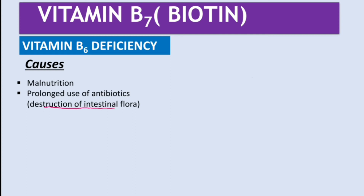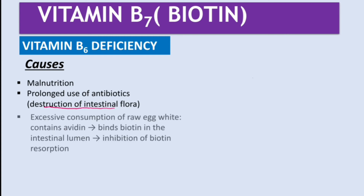A cause very specific to vitamin B7 deficiency is excessive consumption of raw egg white. Raw egg whites contain a molecule called avidin, which binds to biotin in the intestinal lumen and inhibits biotin absorption. People who used to eat large amounts of raw egg whites — such as some bodybuilders — were the ones who typically developed this deficiency.